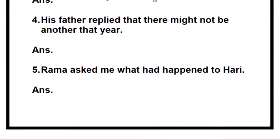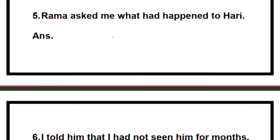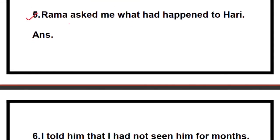Fourth one: 'His father replied that there might not be another that year.' Write 'his father said,' add a comma, remove 'that.' 'There' becomes 'here.' 'Might' changes back to 'may.' 'That year' becomes 'this year.' So: 'His father replied, Here may not be another this year.' Full stop, then close quotes.